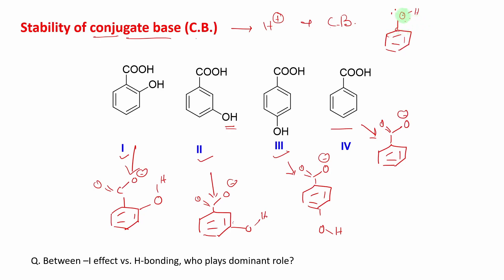This minus I effect is generated because of the electronegativity difference between this oxygen and this carbon atom. Oxygen is more electronegative, consequently it pulls electron density towards itself through this sigma bond, and that is called as minus I effect. Another effect is there which is called as plus R effect. If you push electron density, it will come here.